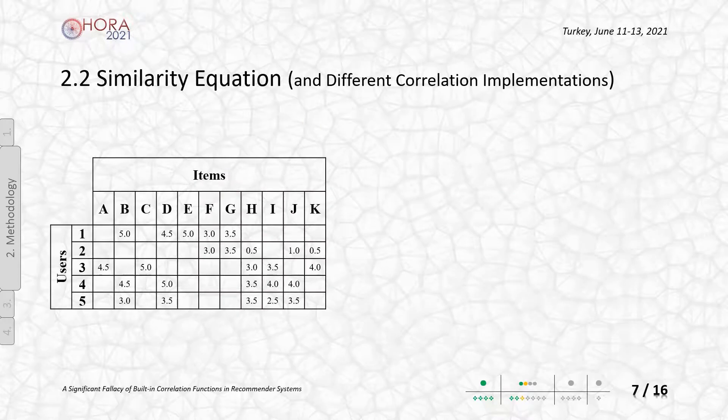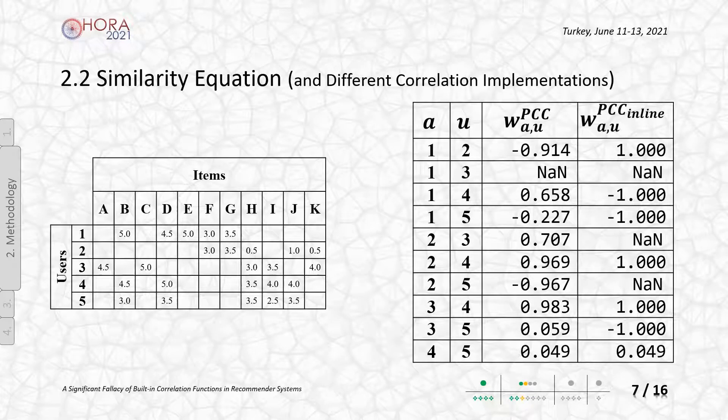Let's discuss special cases originating from this fallacy. You can see a rating matrix example in standard user item matrix format. When correlation scores are calculated based on the aforementioned formulas in previous pages, the weights can be monitored like this.